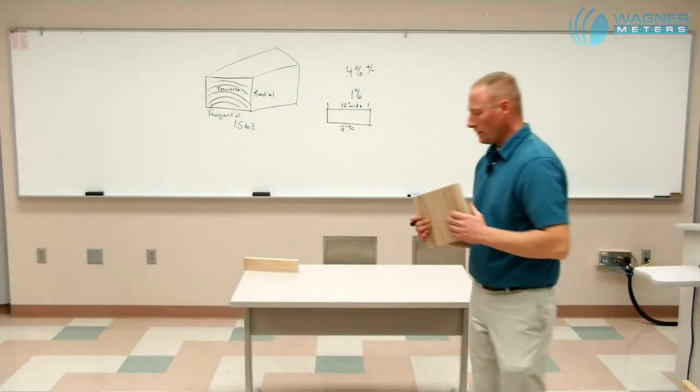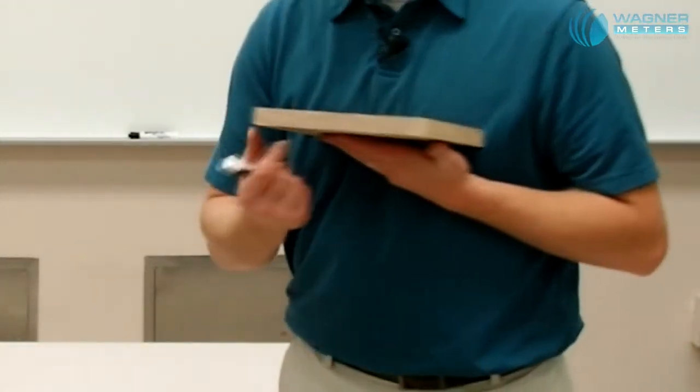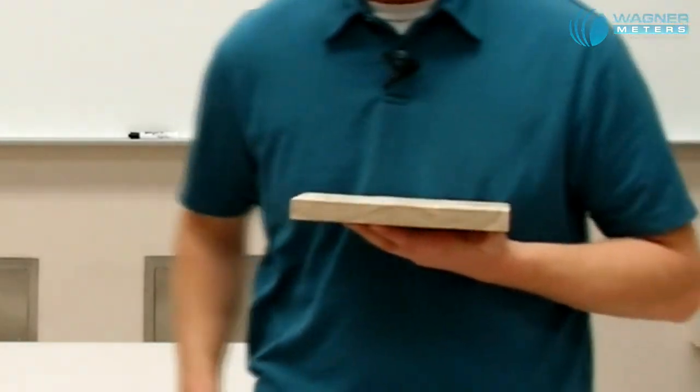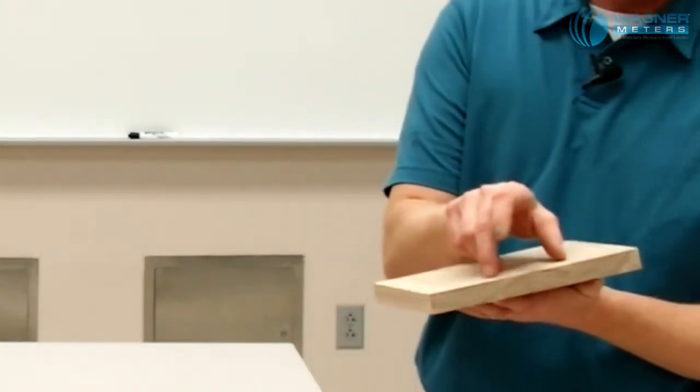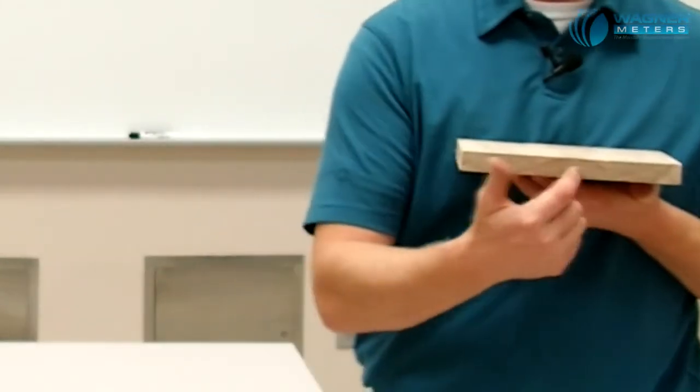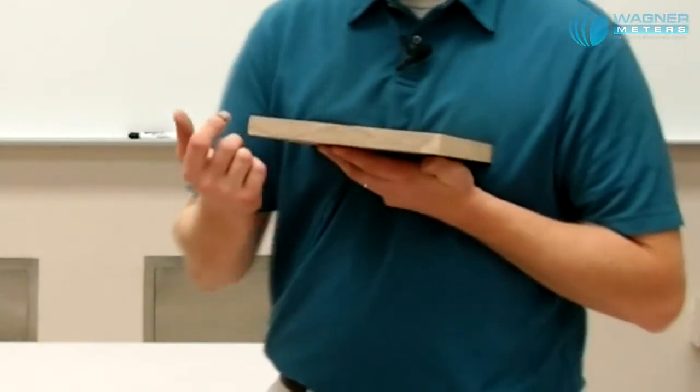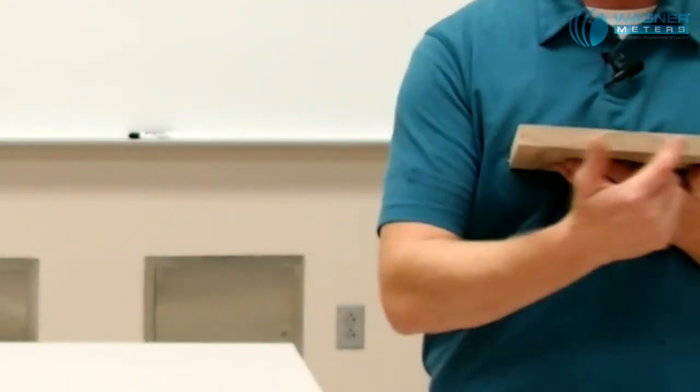Another problem that can arise is here we have three plain sawn boards that are glued together. So understanding this or understanding how wood moves, we know that it's going to move significantly more in this direction than it will in this direction. But the fact that all of these are equal as far as their grain orientation, that they are going to move consistently together.